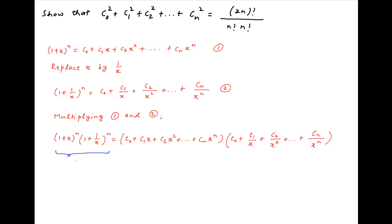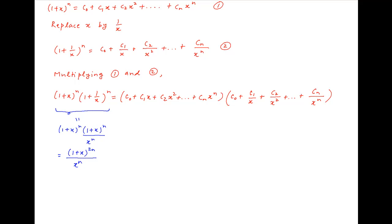The left-hand side can be written as (1 + x)^n · (1 + x)^n / x^n, which equals (1 + x)^(2n) / x^n.